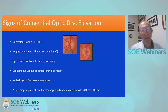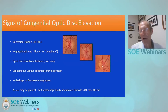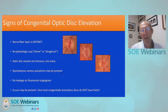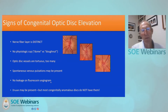The optic disc vessels in congenital elevation are often tortuous and there are often too many of them — the vasculature looks excessive due to vascular anomalies. Spontaneous venous pulsations may be present but are typically absent in either condition; if you do see them, you know you are not dealing with increased intracranial pressure. On fluorescein angiogram, there is no leakage in congenital elevation, whereas there typically is in papilledema — a helpful distinction.